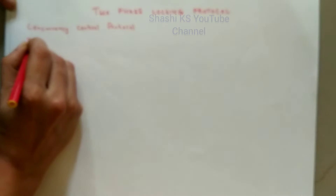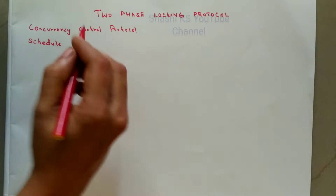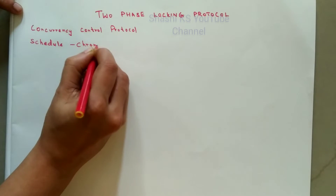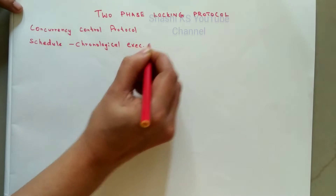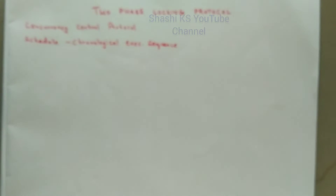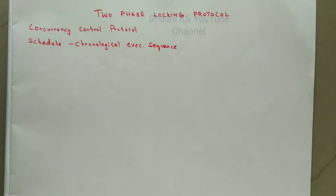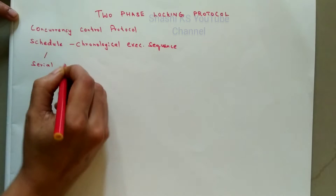The first concept is about a schedule. A schedule is nothing but a chronological execution sequence of a transaction. A schedule can have many transactions and a transaction can have multiple instructions or tasks associated with it. A schedule is of two types: serial schedule and non-serial schedule.